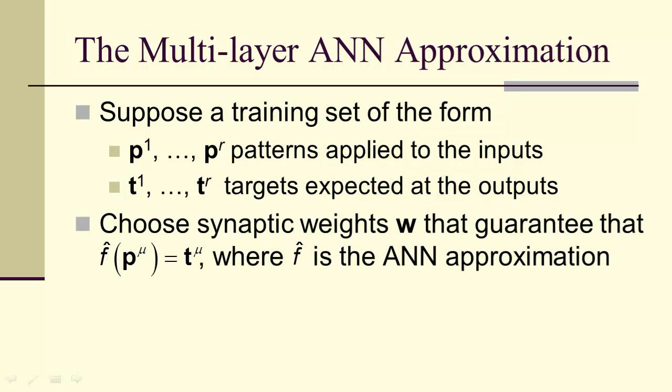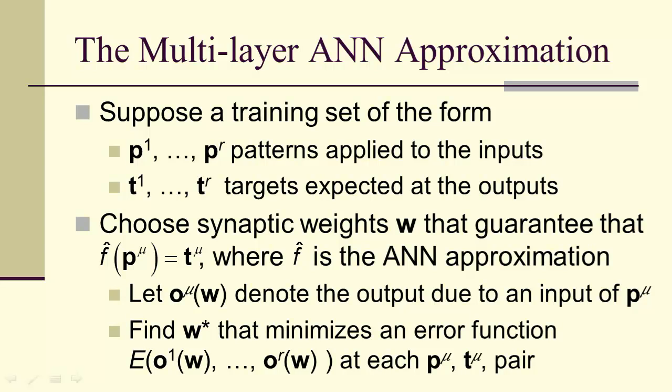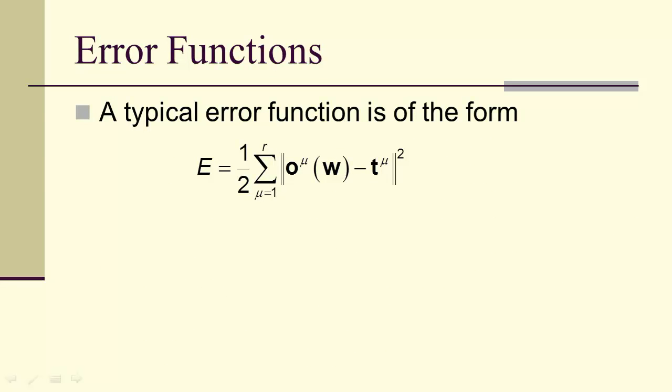So we want to choose synaptic weights that guarantee that the approximation applied to a pattern produces the target. We're going to let O sub mu of W denote the output due to an input of P upper mu. And of course, our goal is we'd like to minimize an error function where the error is going to be the difference between the outputs at the given patterns and the targets.